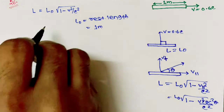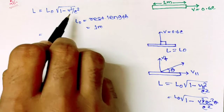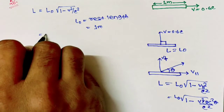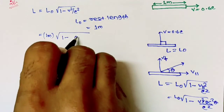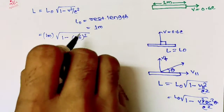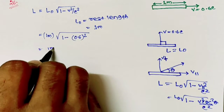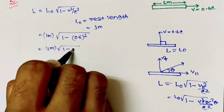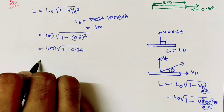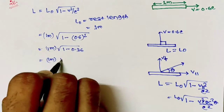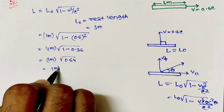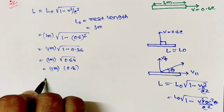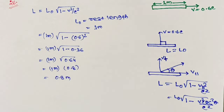Using the value of speed, L equals 1 meter times the square root of 1 minus 0.6², which is 1 meter times the square root of 1 minus 0.36, equals 1 meter times the square root of 0.64, which equals 1 meter times 0.8, giving 0.8 meter. The correct option is option A.